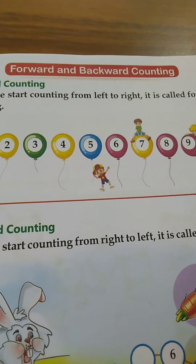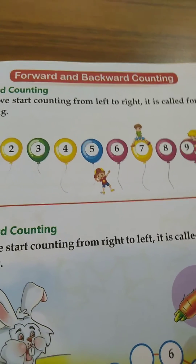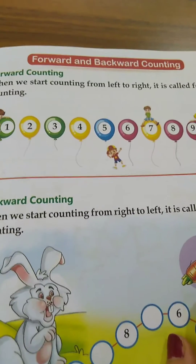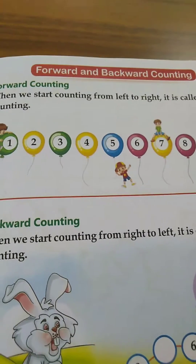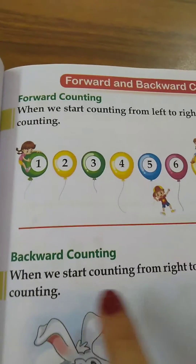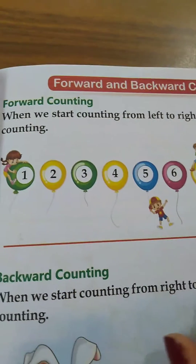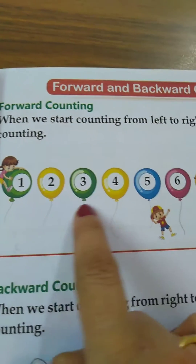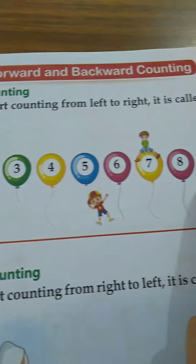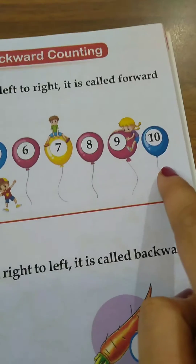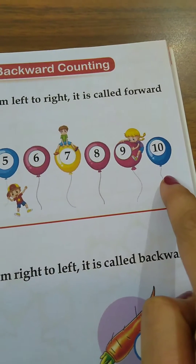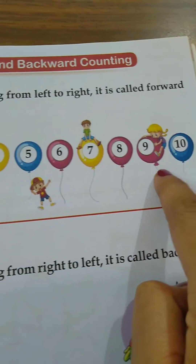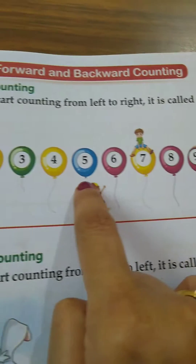Hello kids, welcome to Tulips Play School. Today we will learn forward and backward counting. Forward counting is reading from left to right, and backward counting is reading from right to left.